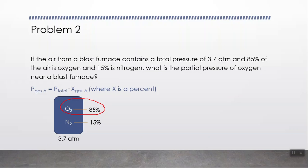If you need a formula, here it is. The pressure of gas A, in this case oxygen O2, equals the total pressure times X of gas A, where X is a percent. In other words, 3.7 atmospheres times 85%. What is 85% of the total pressure? Can we just solve it like this? No, you have to change the percent to a decimal. So 85% divided by 100 is 0.85, and then you can multiply to get a pressure of 3.1 atmospheres for oxygen. And that's it. These are your gas laws.